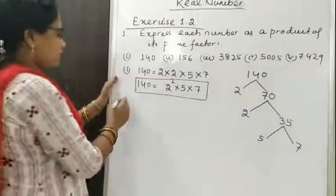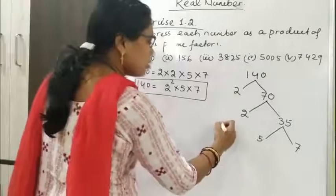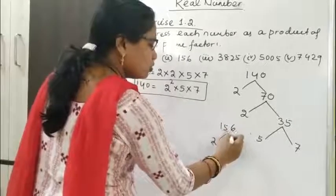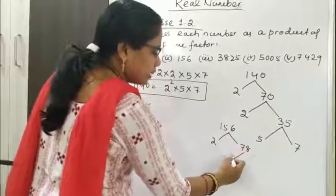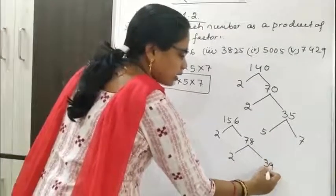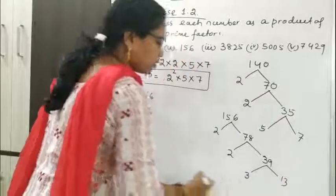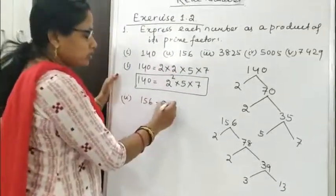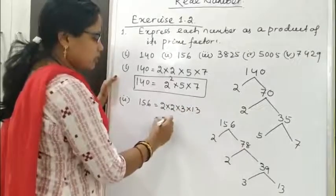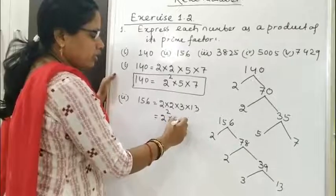Now the second number, 156. Using the same procedure, 156 = 2 × 78. Again divisible by 2, giving 39. Then 39 is divisible by 3, giving 13. So 156 = 2 × 2 × 3 × 13, which equals 2² × 3 × 13.